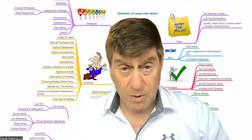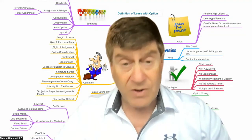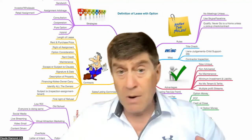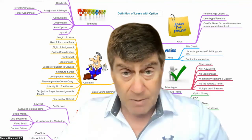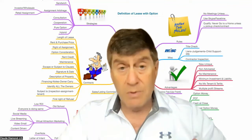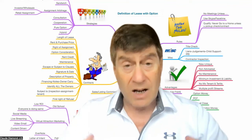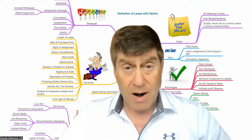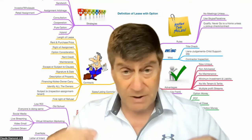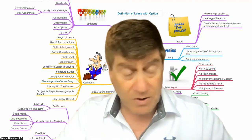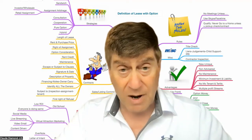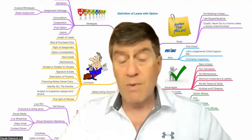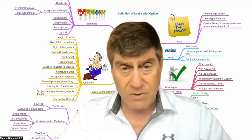What are the basic lease purchase strategies? The most common is what we call the sandwich lease. It's where you negotiate a contract on a property — you rent it with the option to purchase at a predetermined purchase price. Let's say you rent it for three years.